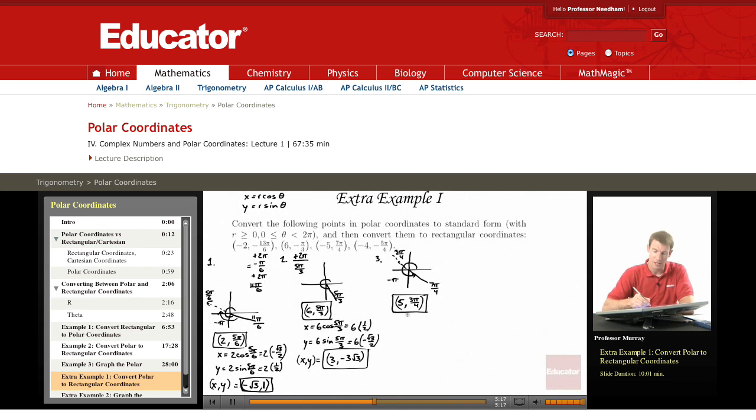And now let me use that to find the x and y. x is r cos θ. So that's 5 cos of 3π over 4, which is 5 times negative √2 over 2. Cosine is negative.